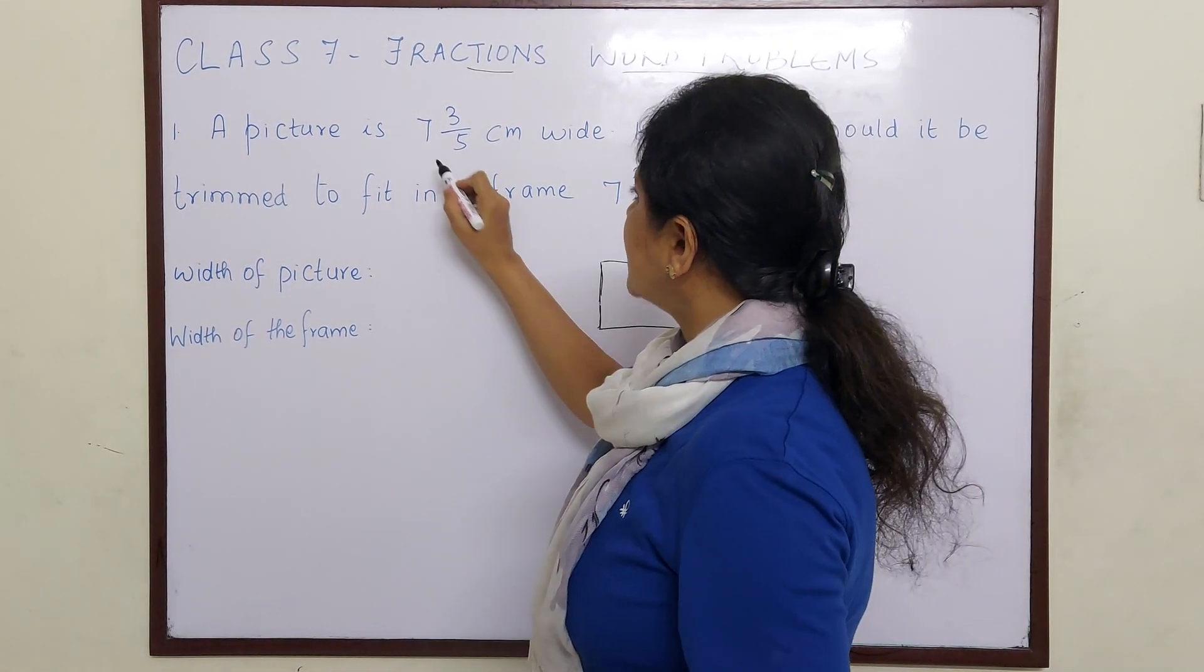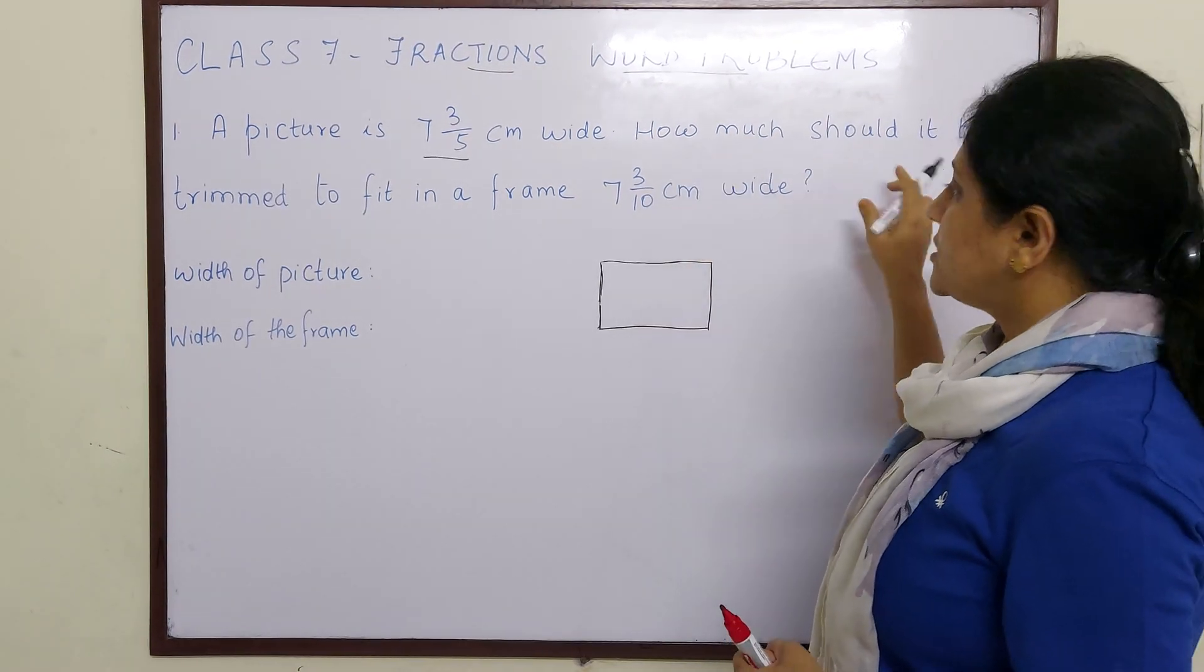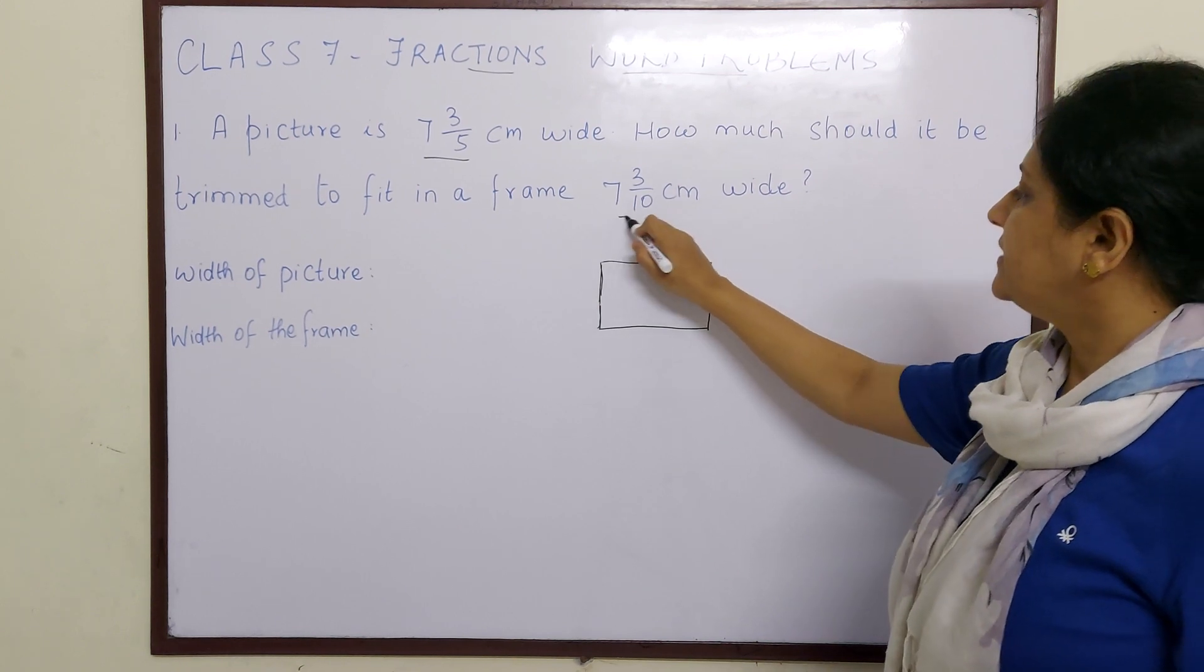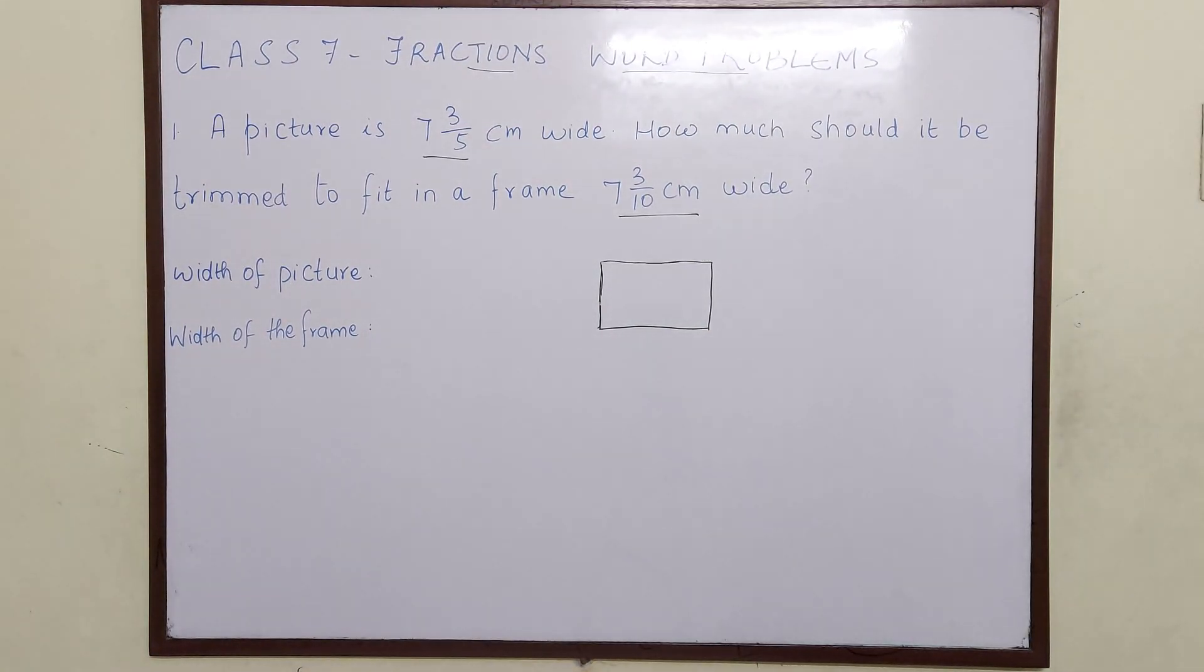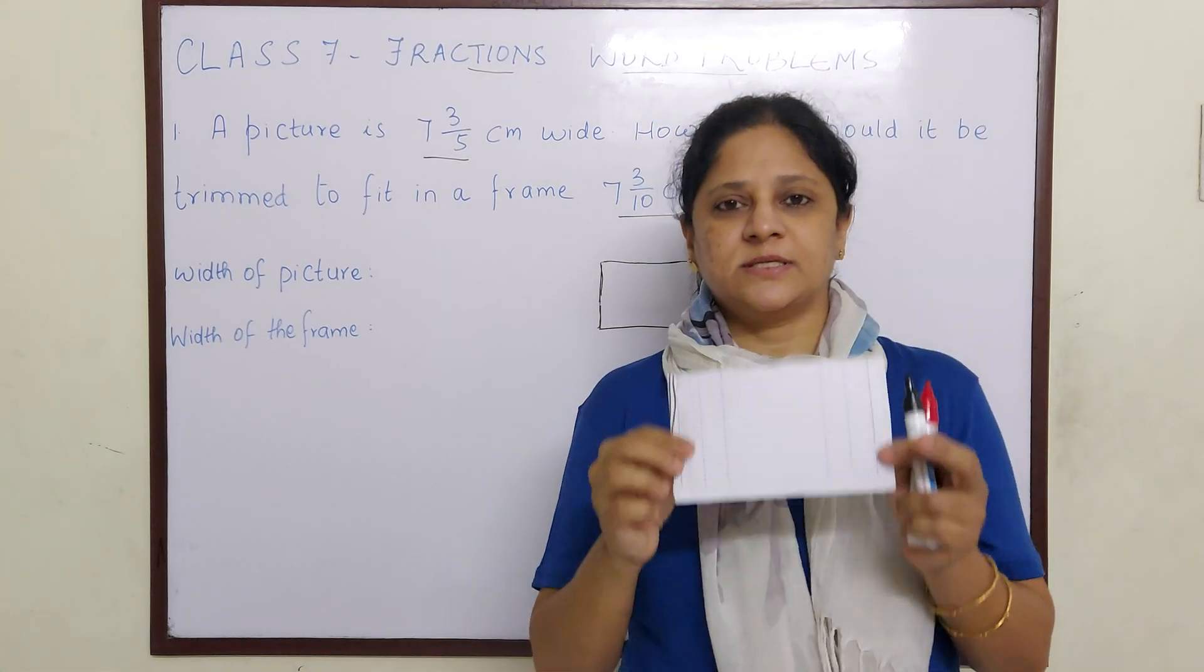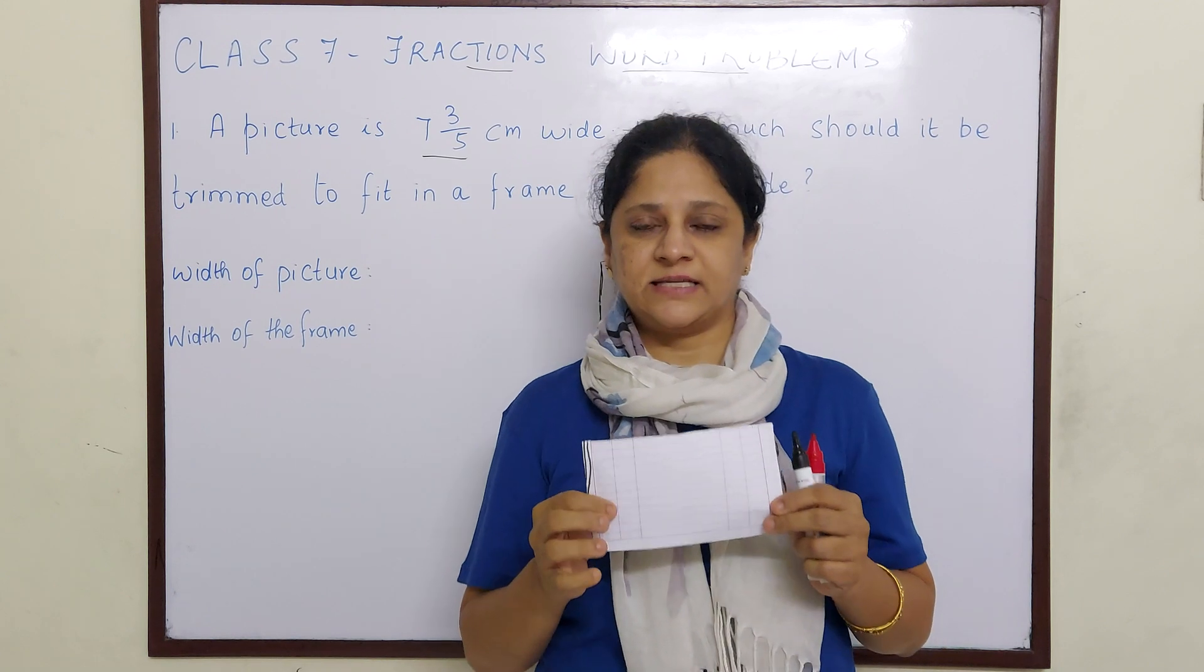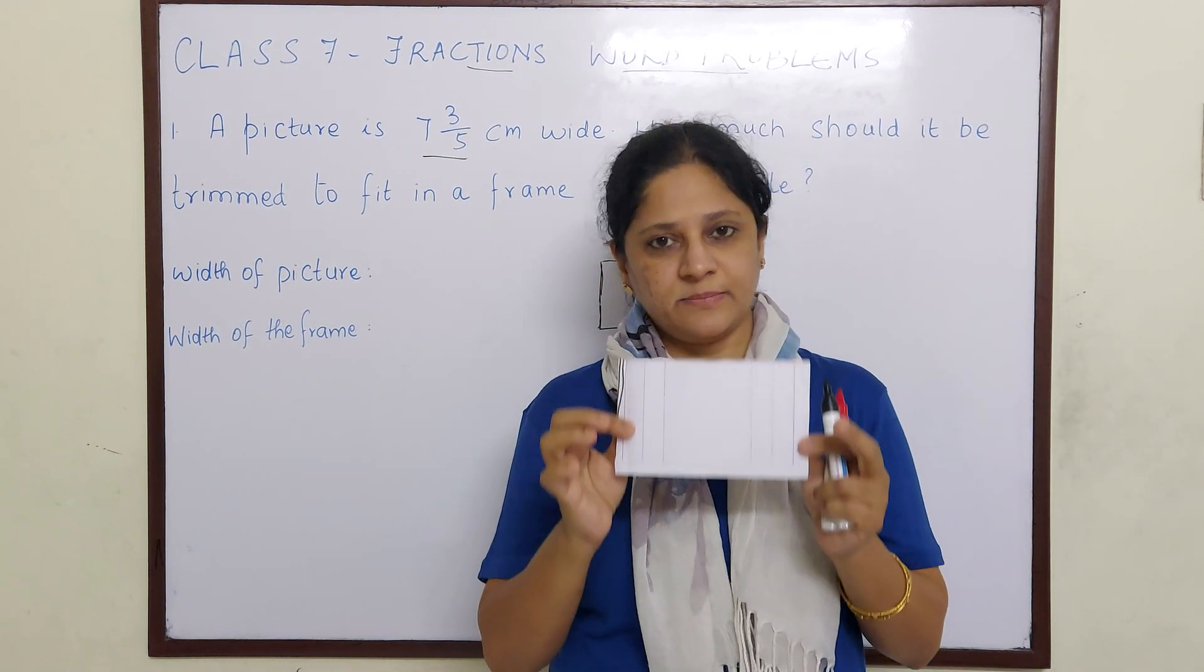A picture is 7 3/5 cm wide. How much should it be trimmed to fit in a frame 7 3/10 cm wide? So let us take a picture children. Suppose this is a picture and this is 7 3/5 cm. Let us assume this is a picture which is 7 3/5 cm.